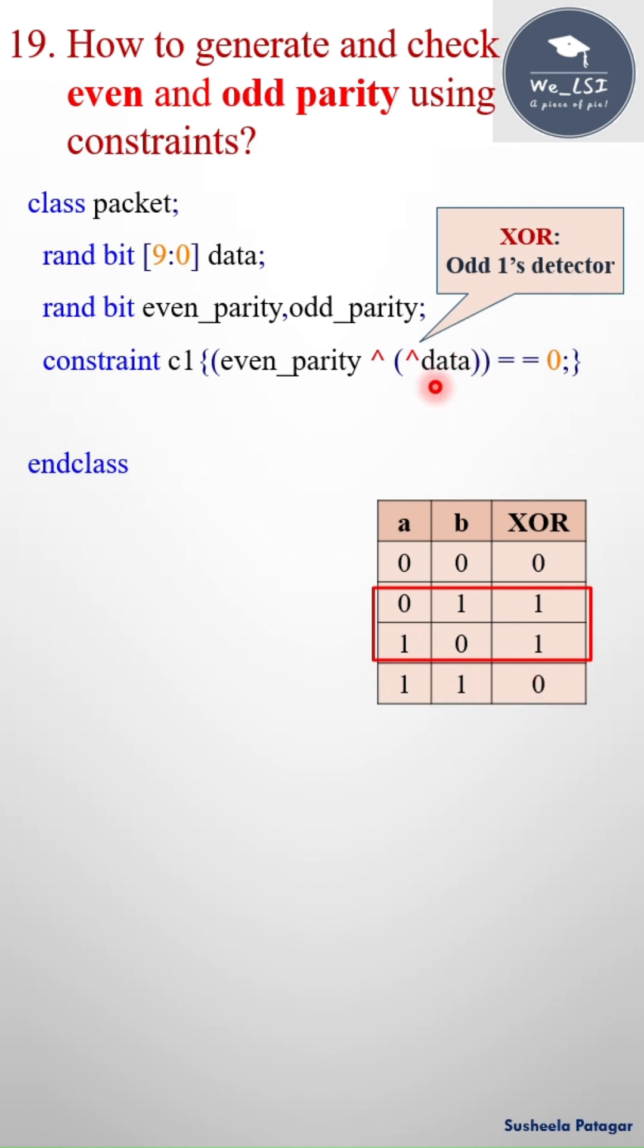So XOR of data gives one if the data has odd number of ones. If the data has odd number of ones, I have to make it even because even parity ensures that the total number of ones in the given data, including the parity bit, is even. To make it even, the parity bit should be one. One XOR one gives zero, that's why the condition is like this.